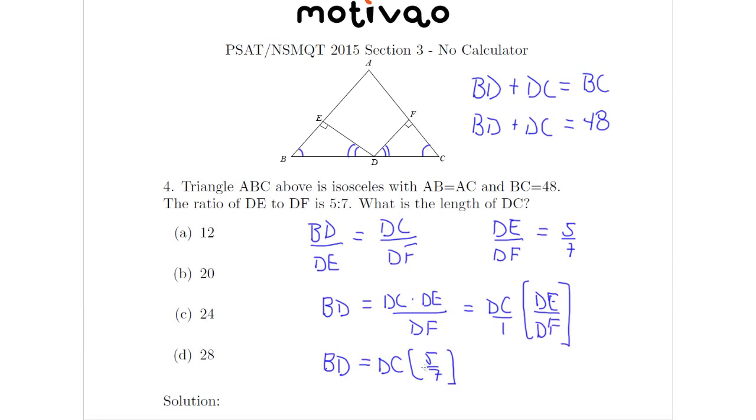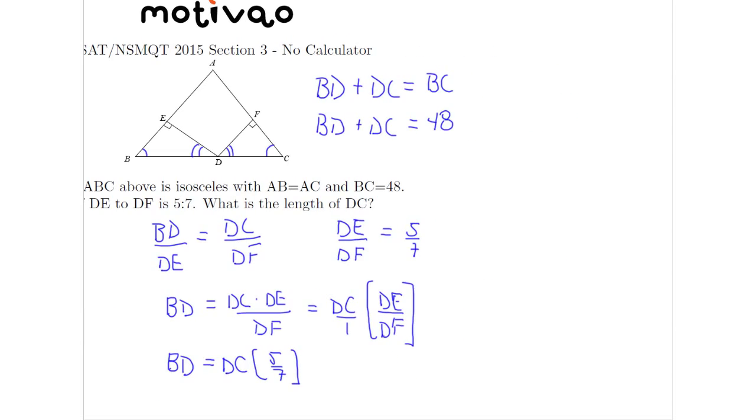So let's plug in that information. So we have that BD is equal to DC times 5 over 7. But where can I substitute this? Well in our original equation that BD plus DC equals 48. So let's substitute BD for DC times 5 sevenths into this equation. That gives me 5 sevenths DC plus DC equals 48.